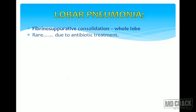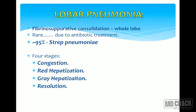In lobar pneumonia, compared to bronchopneumonia, the entire lobe will be involved with fibrinous exudative consolidation of the whole lobe. Nowadays it is rare to see lobar pneumonia, probably due to antibiotic treatment. 95% of lobar pneumonia cases are due to Streptococcal pneumoniae. What is most important in lobar pneumonia is the four stages: stage of congestion, stage of red hepatization, stage of gray hepatization, and stage of resolution. Hepatization means the lung looks like a liver — liver-like consistency — that's why we use the word hepatization.